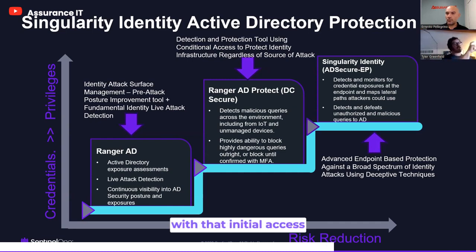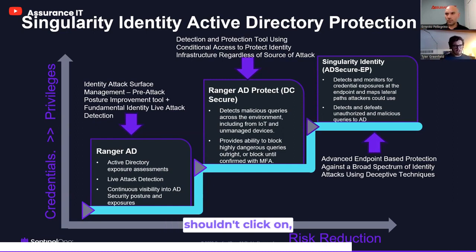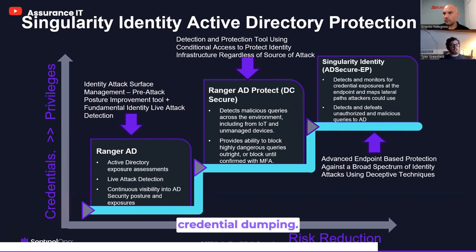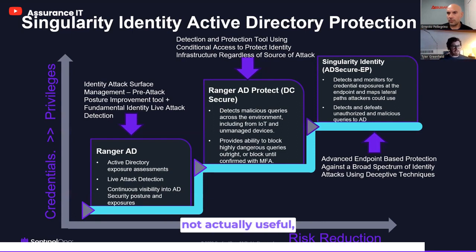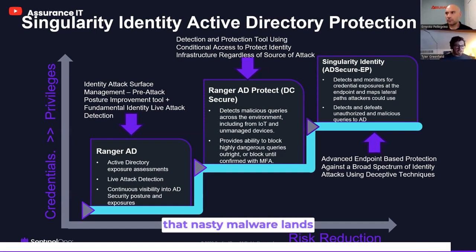It all starts with initial access — it's bad — but we know that every once in a while, someone is going to click on that link they shouldn't click on, or install that USB drive they shouldn't install. What happens next is that identity attack reconnaissance and credential dumping. With this product suite — Singularity Identity from SentinelOne — we're going to be able to prevent that entire chain from progressing past that initial infection. Any information they think they've harvested is going to be fake information that's not actually useful, really dialing back the ability to control and protect against that kind of engagement — from when that nasty malware lands on a system all the way into the earlier phases that allow that to occur.